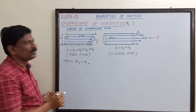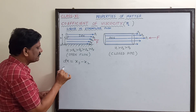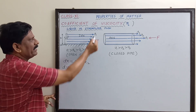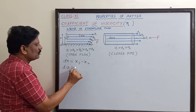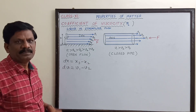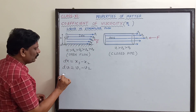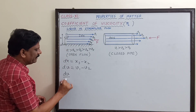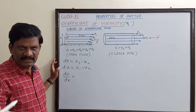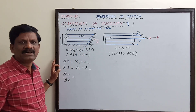Similarly, the change in velocity between the two layers is denoted as dv. Since v1 > v2, this equals v1 minus v2. This ratio dv/dx — for any two layers — gives the rate of change of velocity with distance.